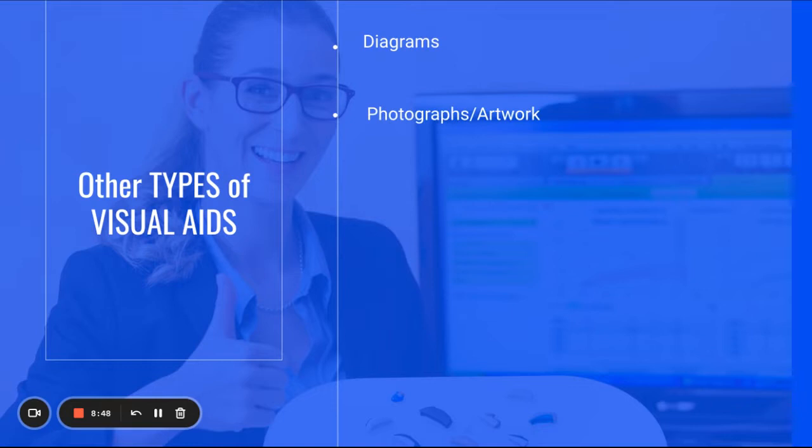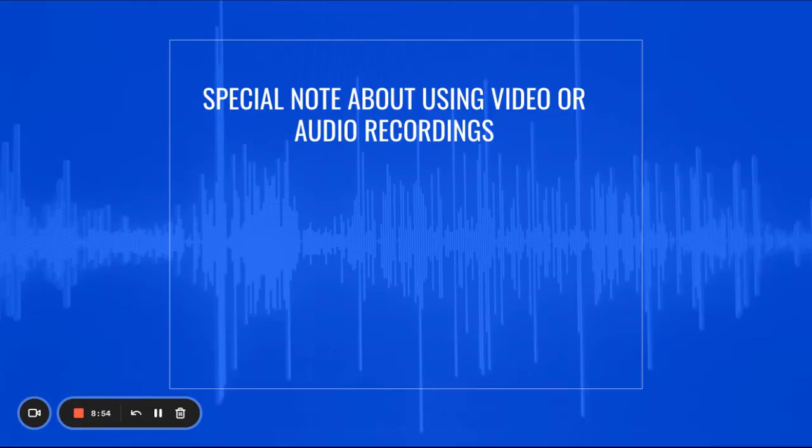Other types of visual aids. Diagrams, photographs or artwork, maps, videos or audio recording, objects or models.